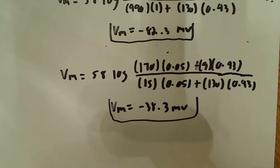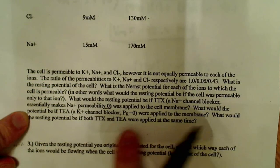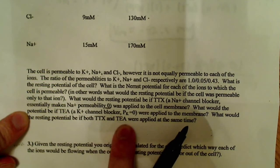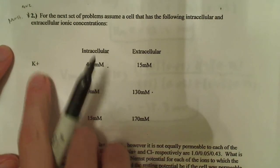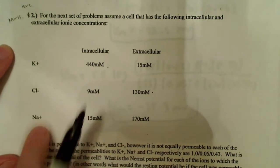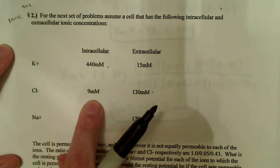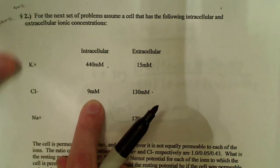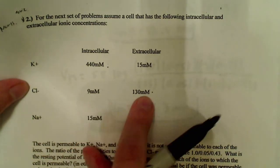The last question says: what would happen if both TTX and TEA were applied at the same time? So now both sodium and potassium are being blocked. The only thing that would affect the overall resting membrane potential would be chloride. So essentially this would just be the Nernst potential for chloride. You could plug these values into the Goldman-Hodgkin-Katz equation, or you can just use the Nernst equation to find this final value.